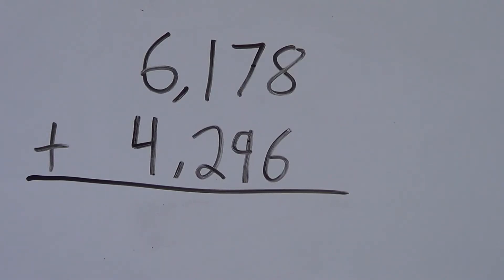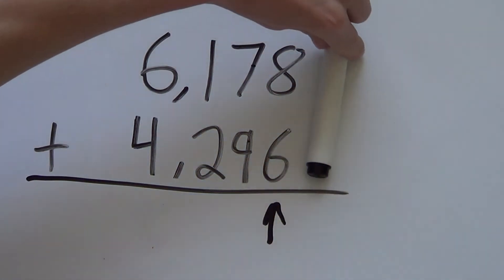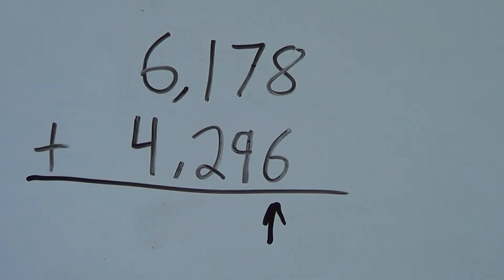Next up, we have a bit of a harder one. We have 6,178 plus 4,296. But we still have the same approach. We line up the columns from the back to the front, all on top of each other very clearly. We have our line. The solution will be here. And we have our plus sign. Now that we have it all set up, we can add.